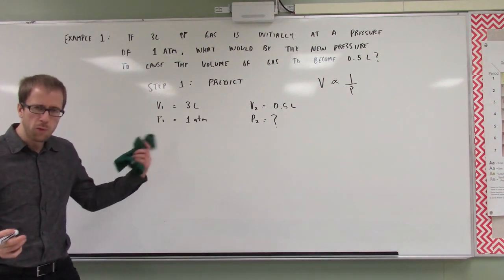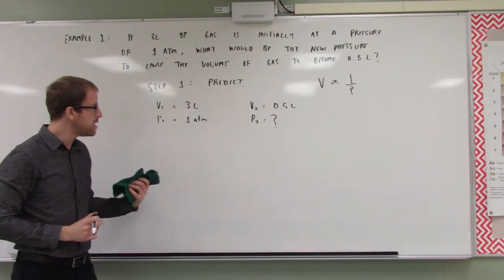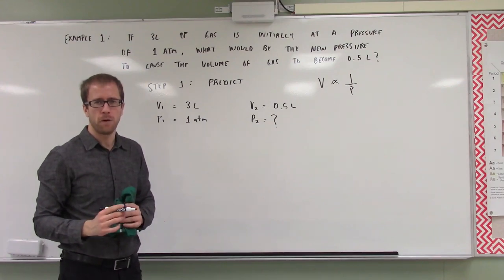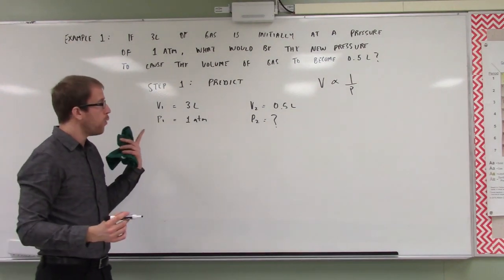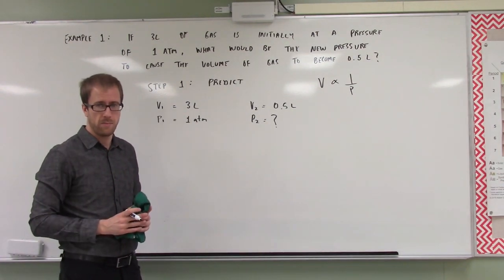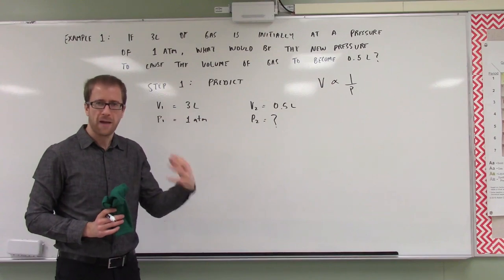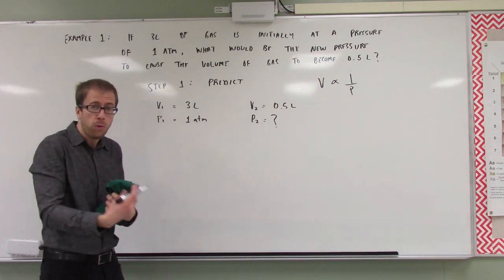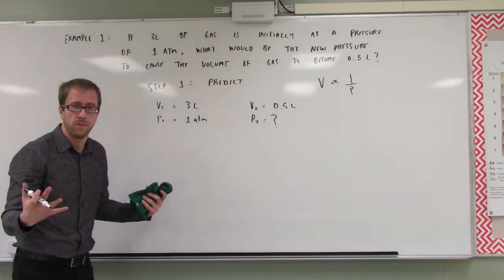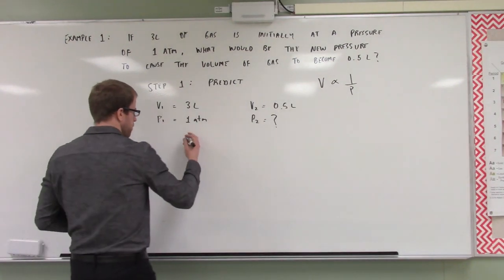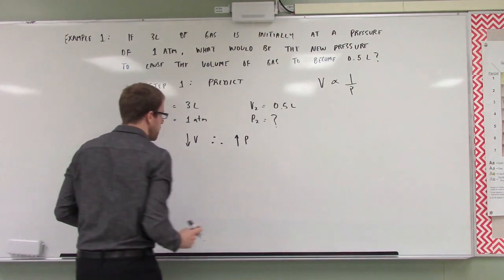Now what did we do? We decreased our volume. How much did we decrease it by? We decreased it six times. If we decrease our volume six times, what must have happened to our pressure? Our pressure must have increased six times. So our prediction is: our volume decreased, therefore our pressure must have increased.